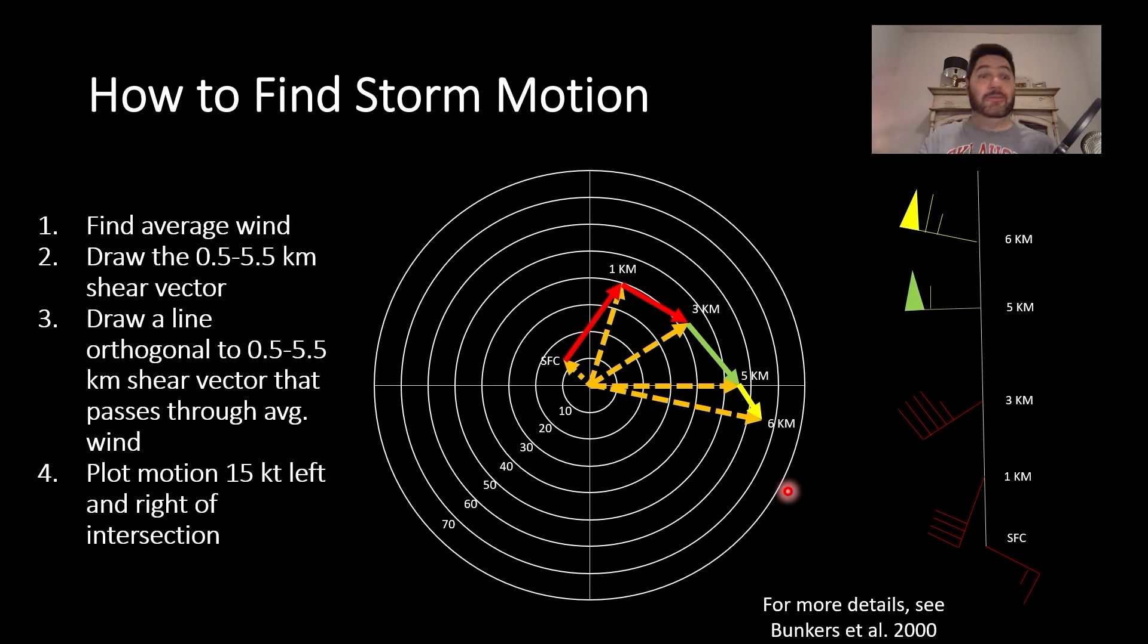Now we're going to look at storm motion. There was a paper by Matt Bunkers in 2000 that describes a method for finding storm motion for right-moving and left-moving supercells. The technique is: first, find the average wind, then draw the 0.5 to 5.5 kilometer shear vector, then draw a line orthogonal to that passing through the average wind, and then plot motion 15 knots to the left and right of that intersection. We'll go through that exercise here.